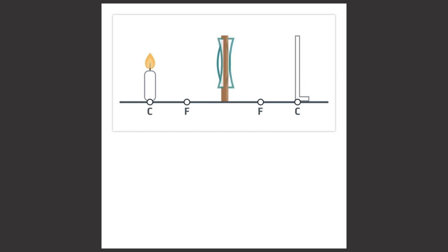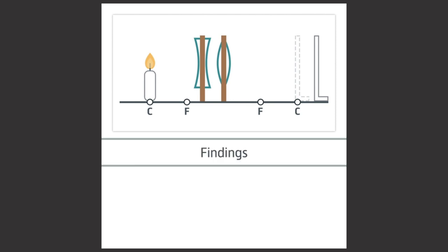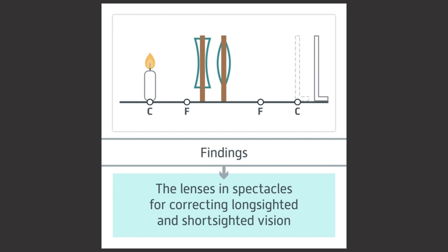Then place a concave lens further away from the screen than the convex lens and move the screen to get a clear image — note that the screen would now be further away. You could then relate your findings to the lenses used in spectacles for correcting long-sighted and short-sighted vision.